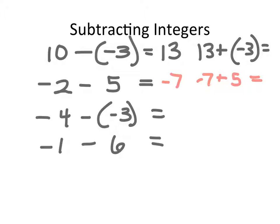In the next problem, I'm already short 4 things and I'm going to take away negative 3. Well, if I took away 3, then I would be short 7. But I'm not taking away 3, I'm taking away negative 3 — that means I'm taking away things that I'm already short, which makes me move toward the positive direction. So my answer here would be negative 1. We can check this again with our reverse operation.